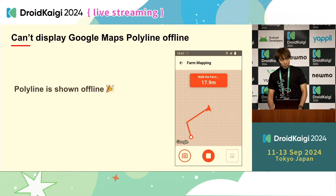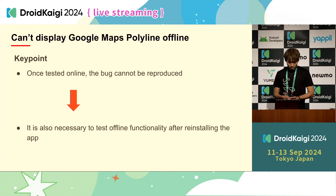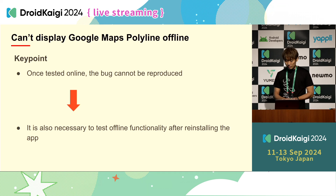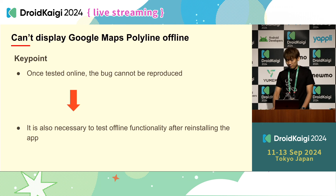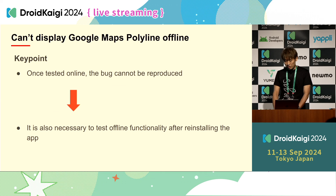Even though the map image isn't shown — just a grey background — the polyline is shown offline. This issue was also not discovered during development: once the app was debugged online, the issue would not occur, so the app had to be reinstalled and tested offline from the beginning. In addition to regular checks, it's necessary to check offline functionality after reinstalling the app.